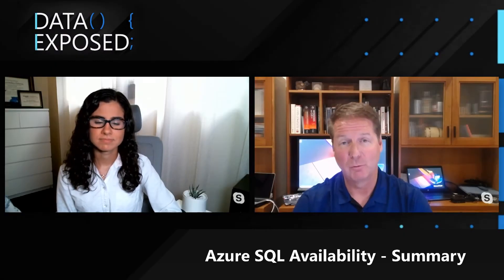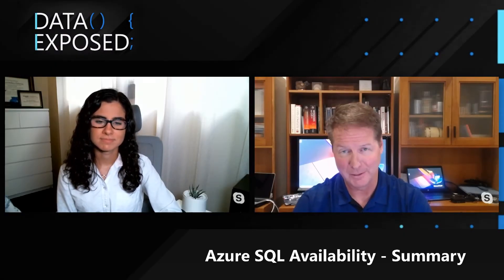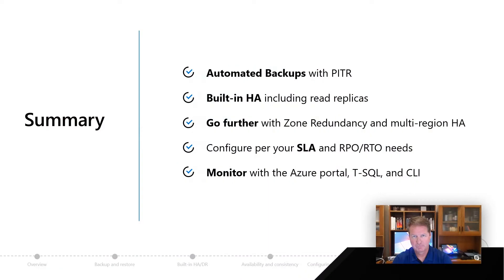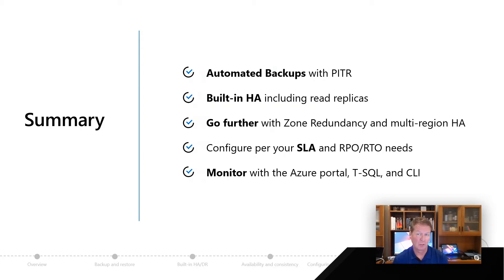Let's take a look at a summary of what we've learned in the module on availability. Think about the amazing story I've shown you about availability in Azure SQL: automated backups with geo-redundancy, the ability to do point-in-time restore, built-in HA across different service tiers to meet your needs, including things like read replicas.